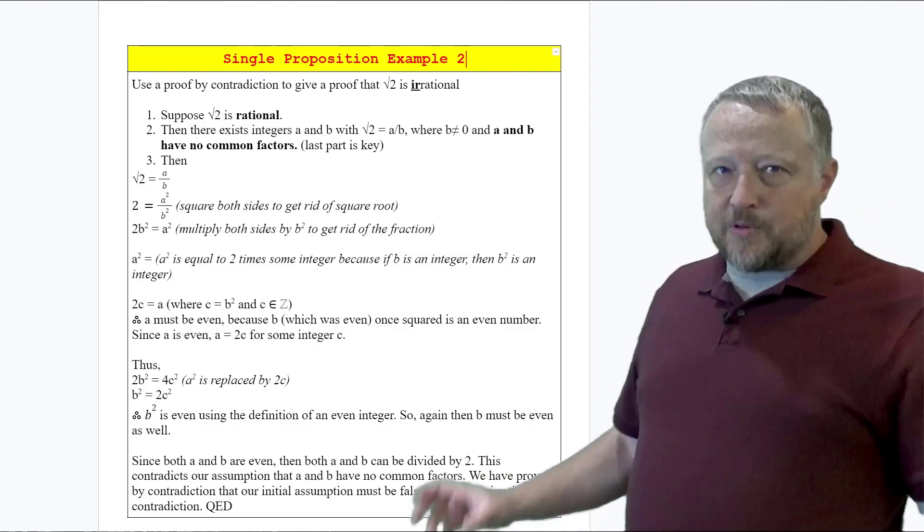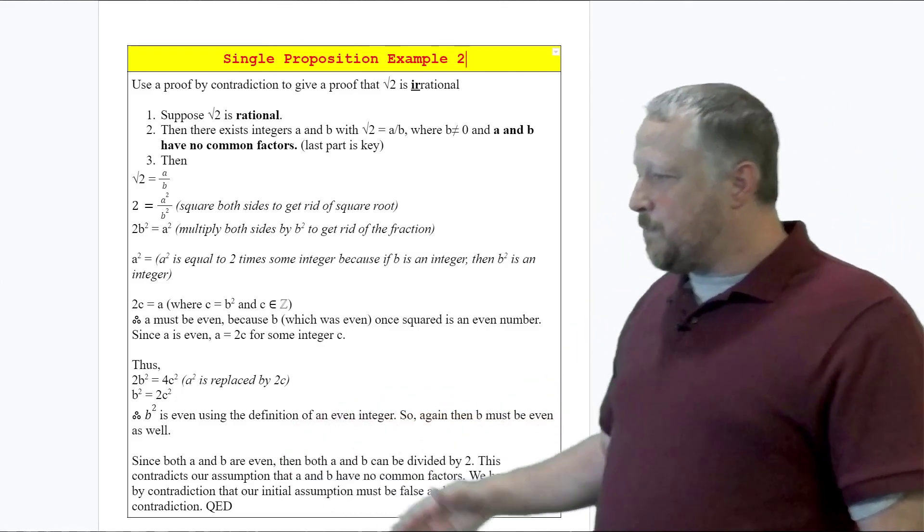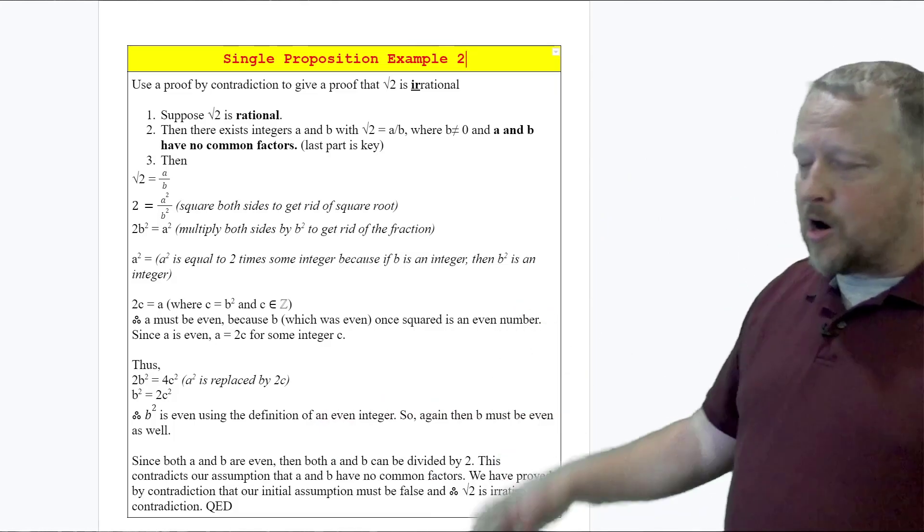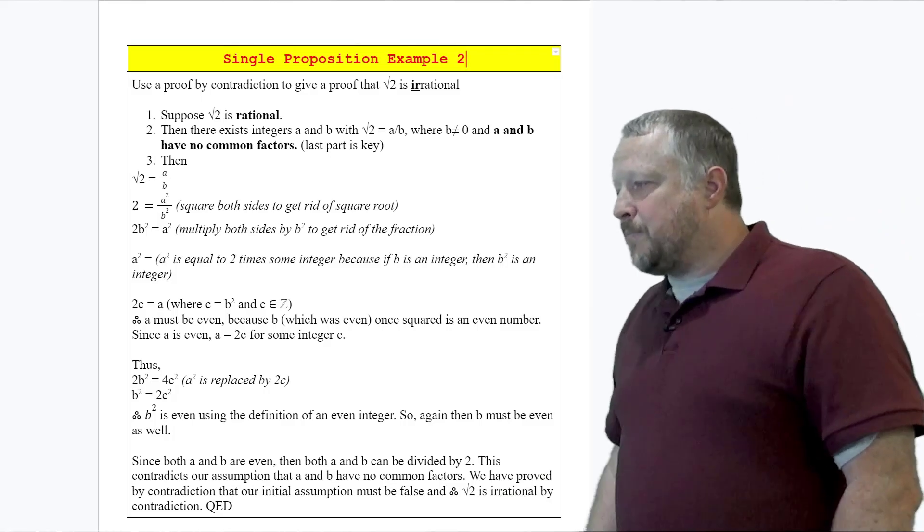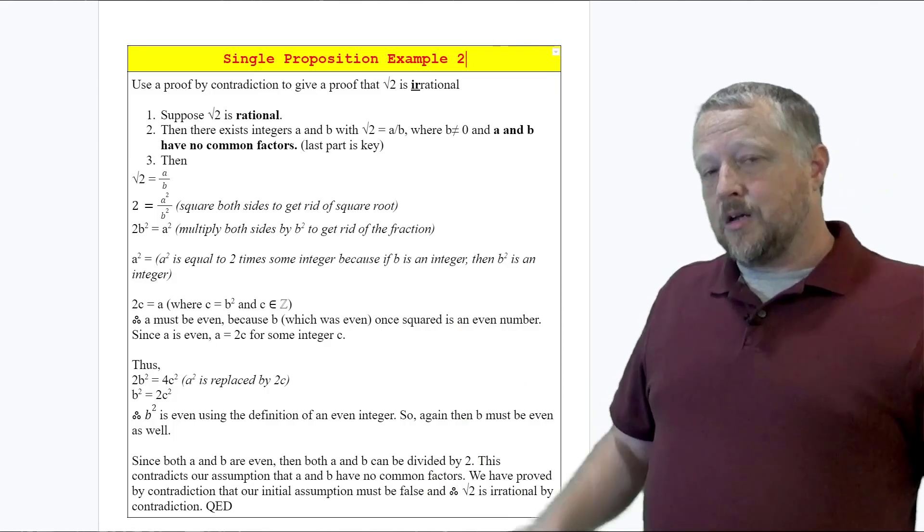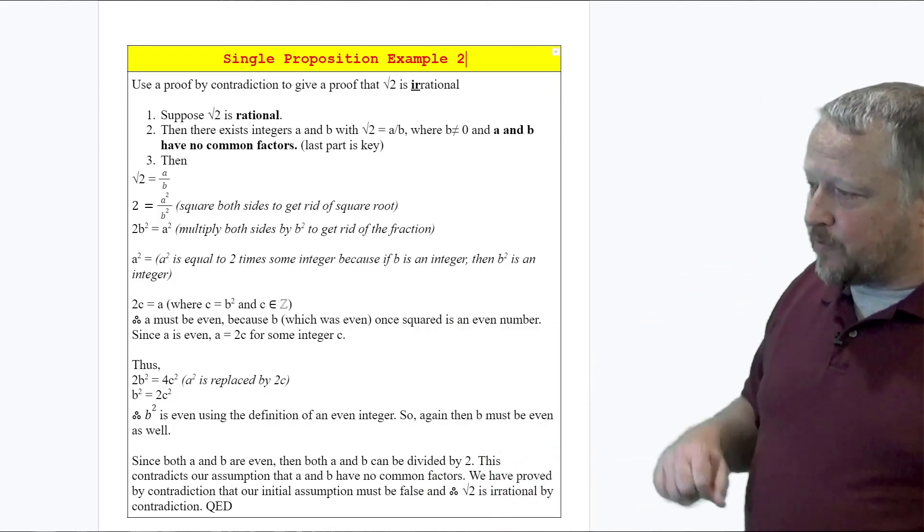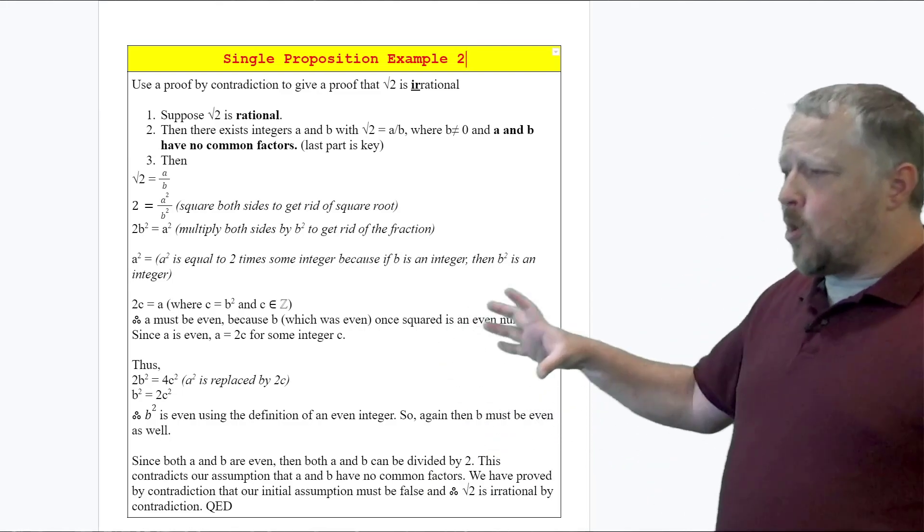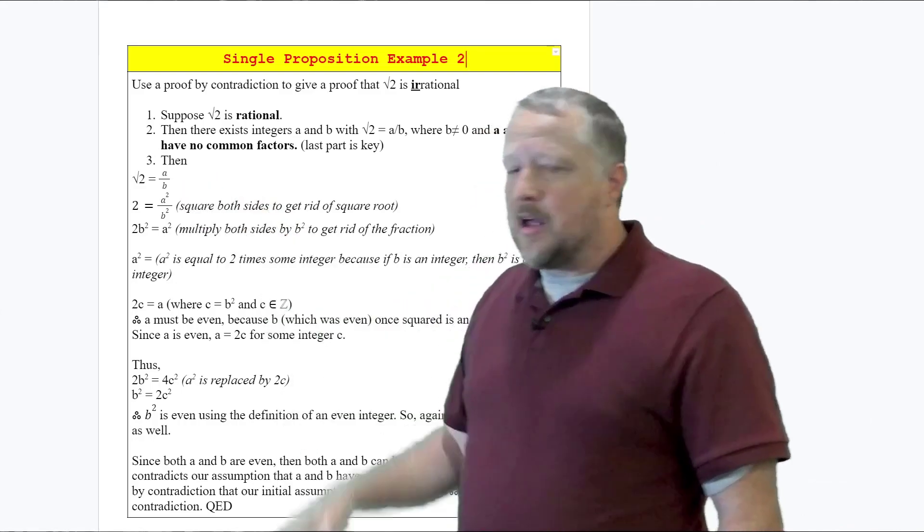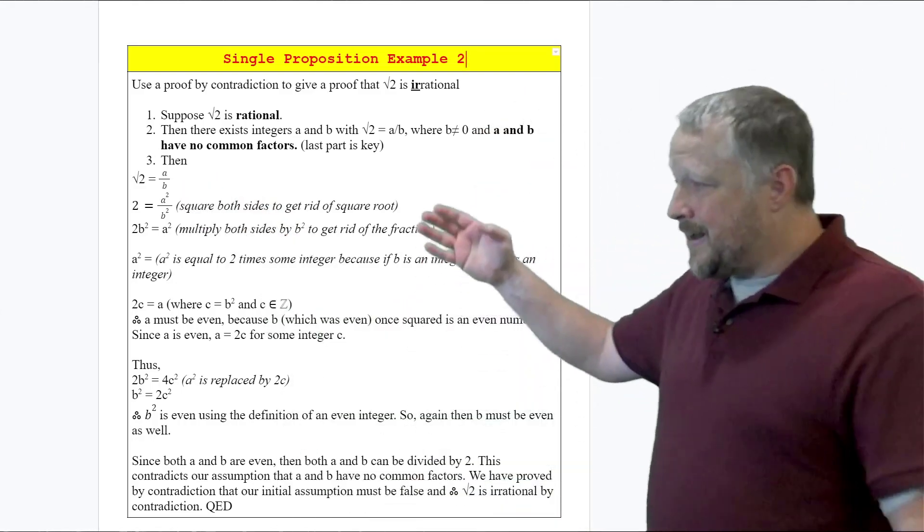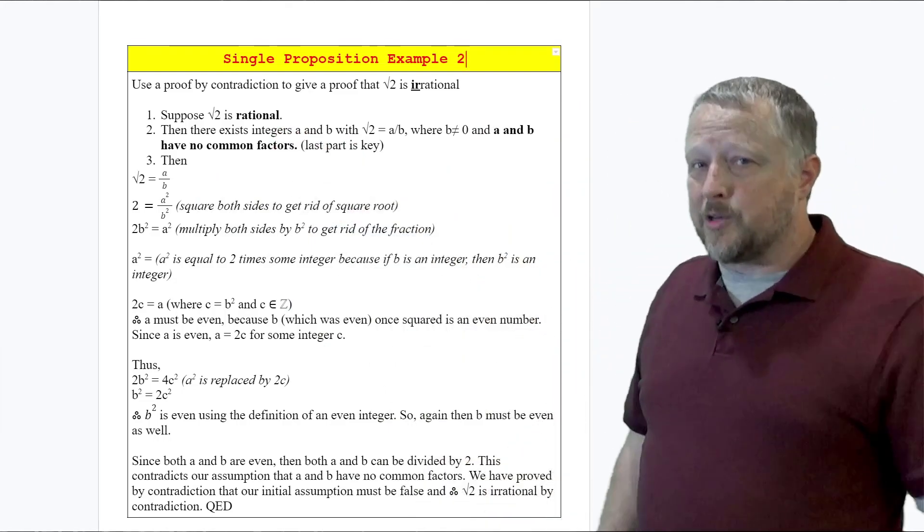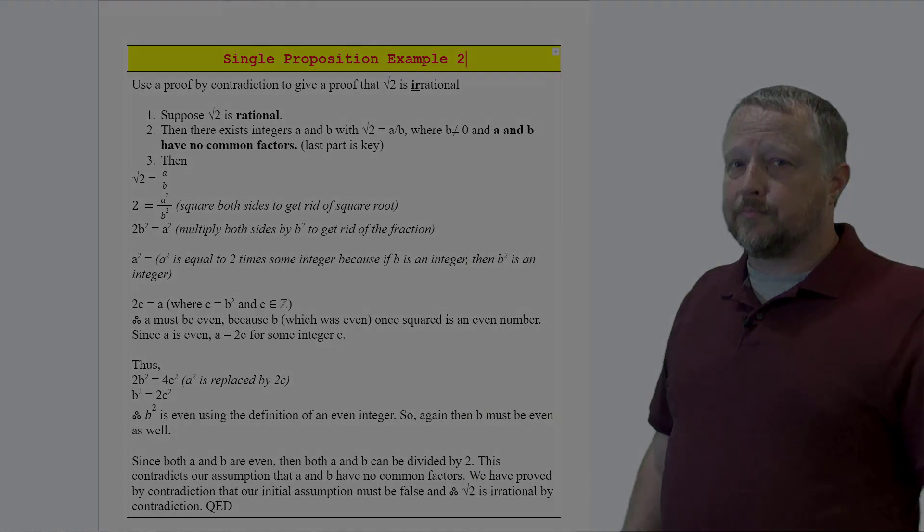Notice at the end, since both a and b are even, both a and b can be divided by 2. This contradicts our assumption that a and b have no common factors. So there's our contradiction, and we put our stamp of approval. QED. Notice this took a lot of work because we had two different items we had to worry about when solving this, and it's from the definition of a rational number which we've done before. A lot of research went into solving this particular example.